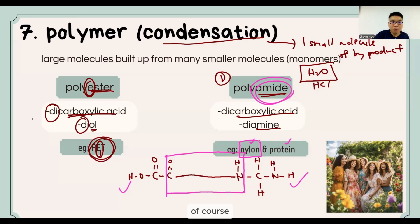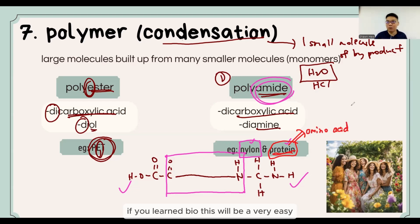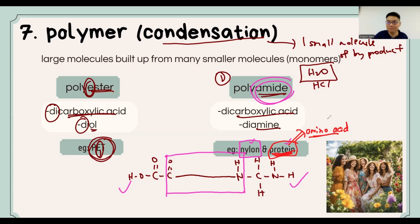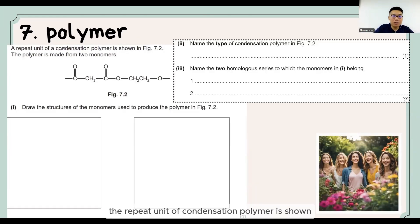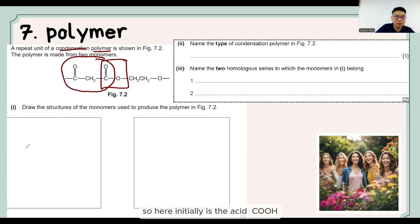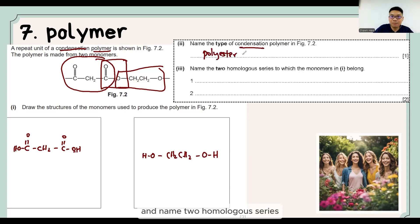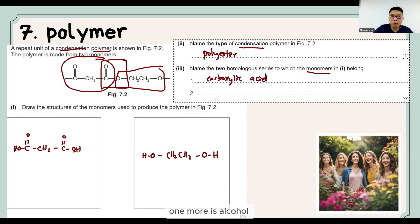Let's see an IGCSE question. The repeat unit of a condensation polymer is shown. Since it is a condensation polymer, it is either an amide bond or an ester bond. Looking at the structure, it is clearly an ester bond — the acid part initially came from COOH and the other part came from the alcohol. The name of this type of condensation polymer is polyester. The two homologous series the monomers come from are carboxylic acid and alcohol.